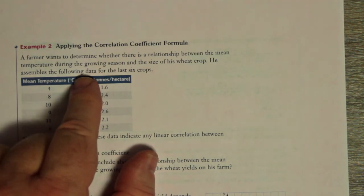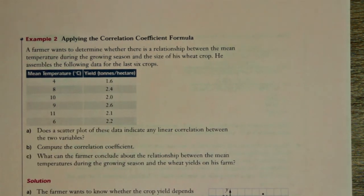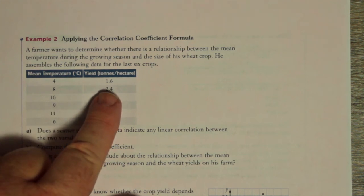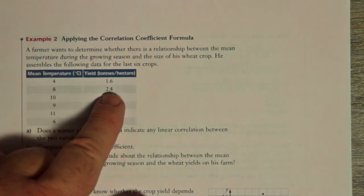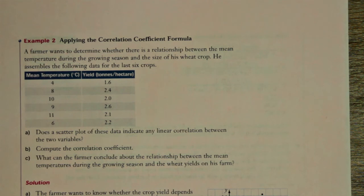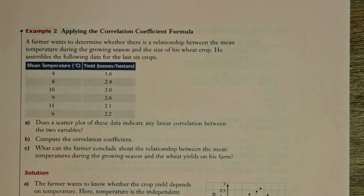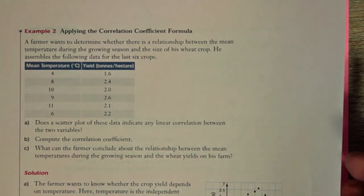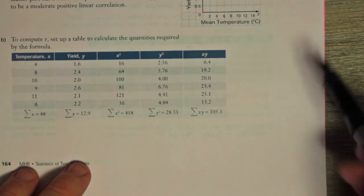We have a problem where a farmer wants to determine whether there's a relationship between the mean temperature during the growing season and the size of his wheat crop. He assembles data for the last six harvests: mean temperature and yield in tons per hectare. Now, you need 20 data points for a scientific sample, but usually for problem solving, and in the interest of keeping the problem short, they give maybe five or six data points — definitely not more than ten. In their solution, they make use of the so-called lazy formula or machine formulas.